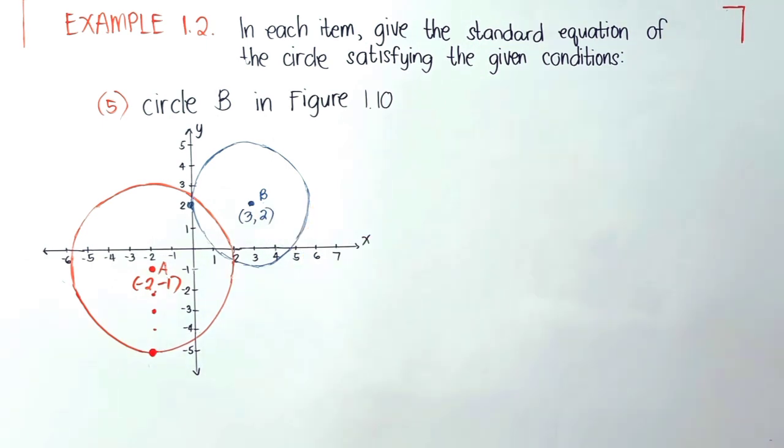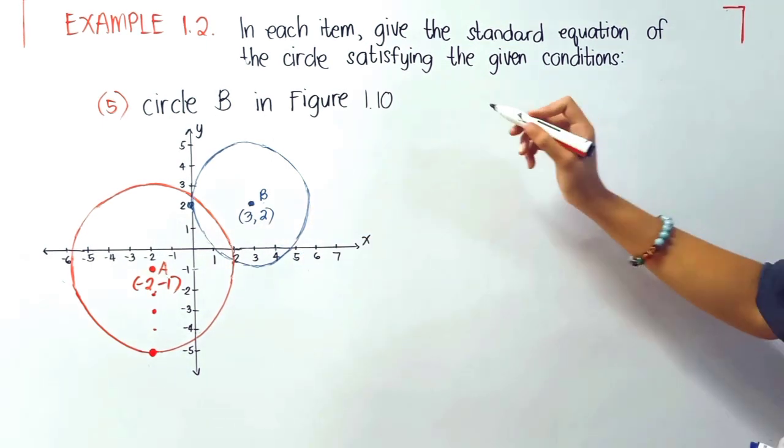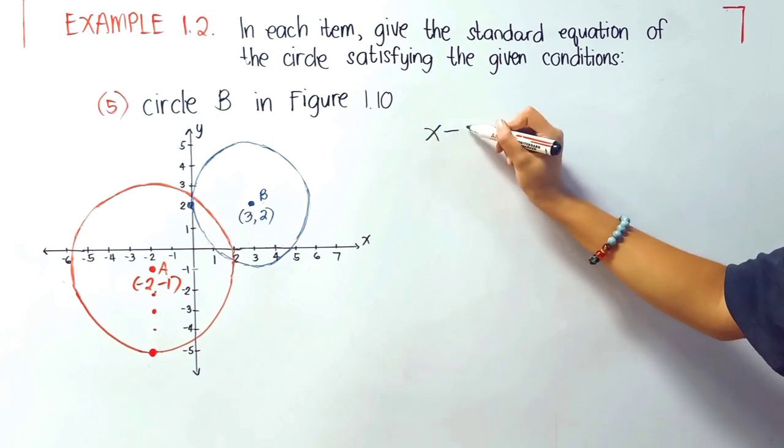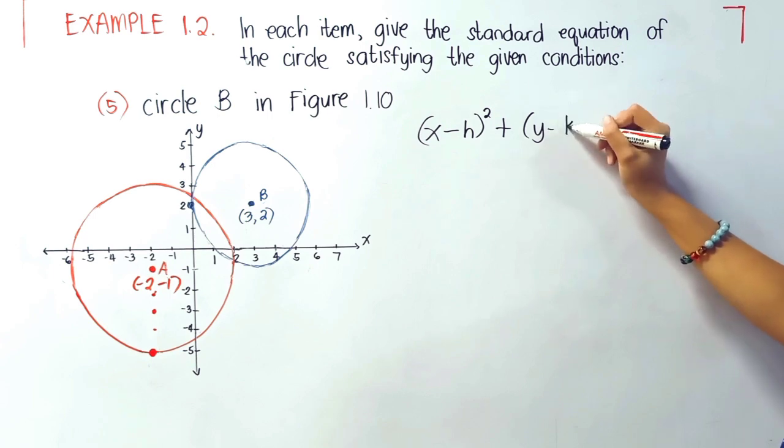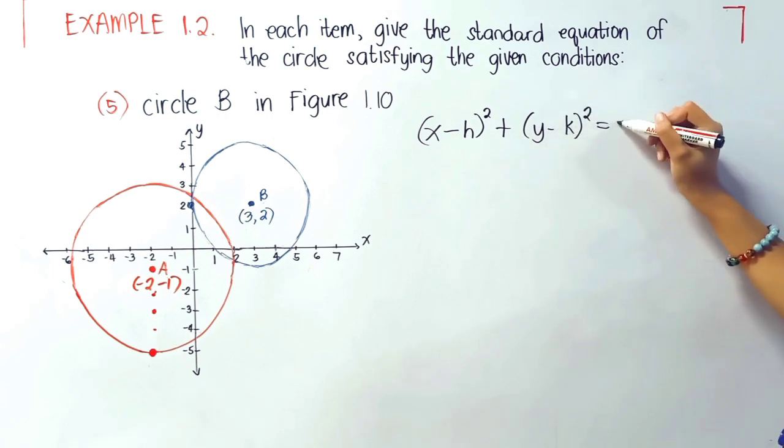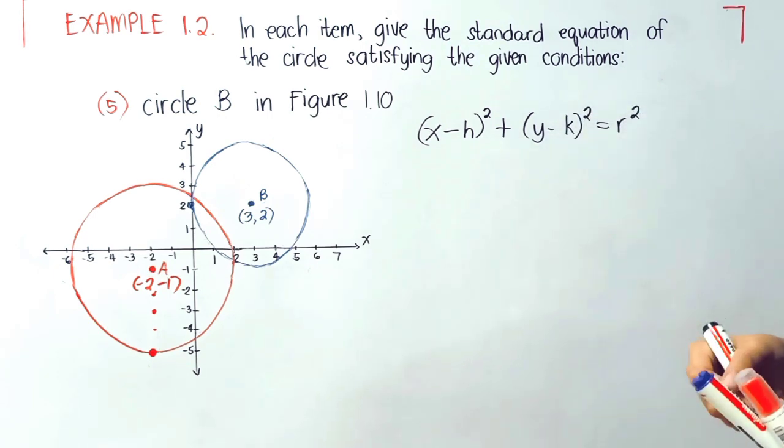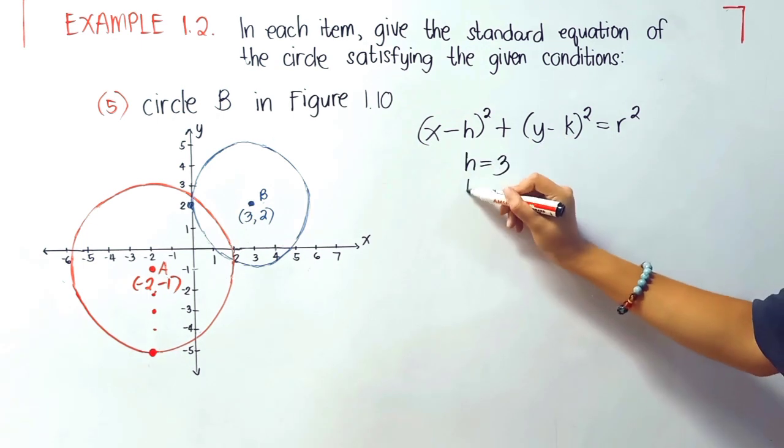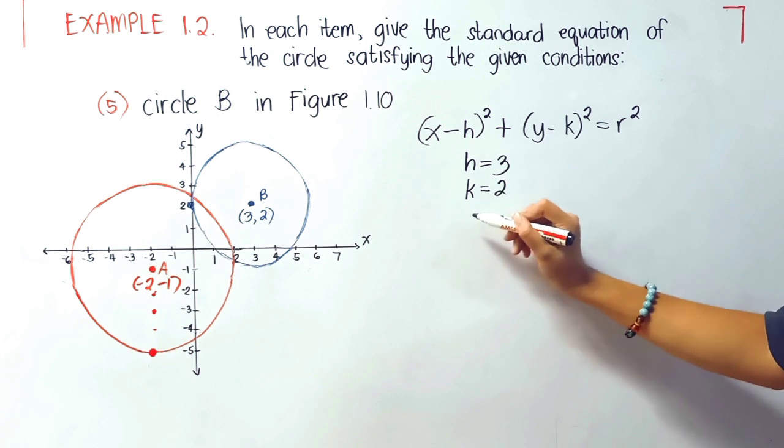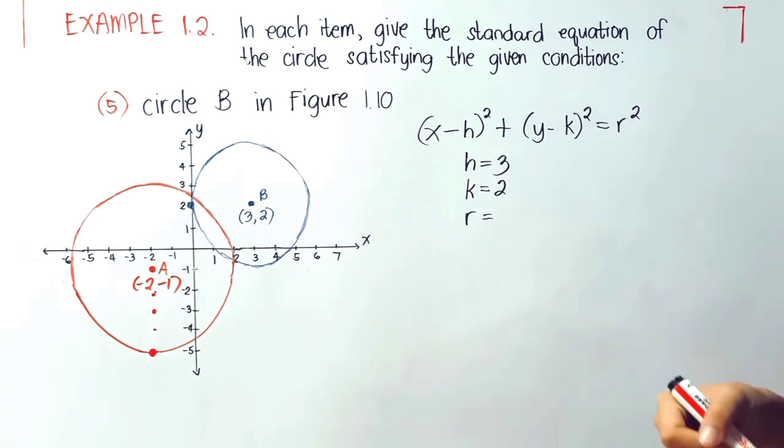Since it is not in the origin, we will be using x minus h quantity squared plus y minus k quantity squared equals r squared. Again, our h is 3, our k is 2, and our r is still unknown.